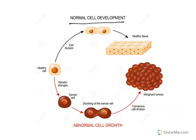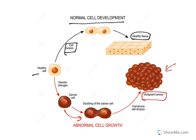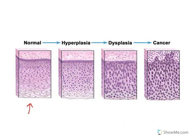In normal cell development, a healthy cell divides and forms normal tissue. In cancer, cancerous cells multiply and form malignant tumors — this is abnormal growth. Looking deeper: hyperplasia means an increase in cell number due to continuous cell division; dysplasia means there is abnormal cell growth, where cells are not normal.